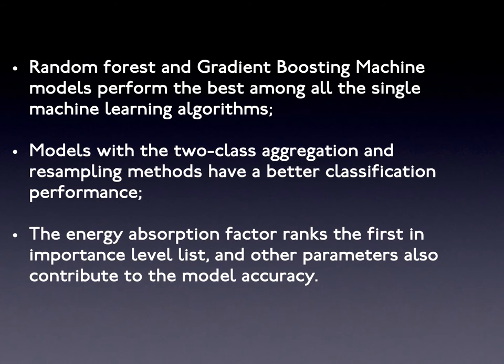Because the results are extensive, we just picked some key points to highlight here. If you are interested, please check our papers for more information. For single machine learning models, we found the gradient boosting machine model and random forest model performed the best among all single machine learning algorithms, because they are iteratively enhancing the classifiers. We also find that the problem with multiple classifications of injury severity is that minority classes take quite small proportions in the dataset.